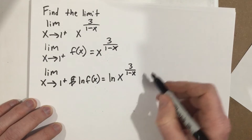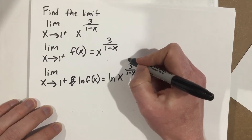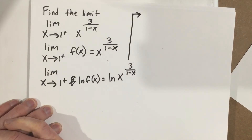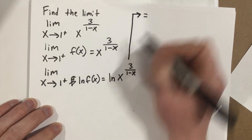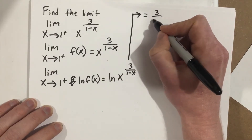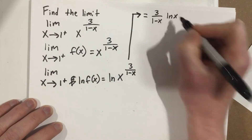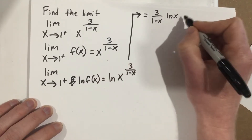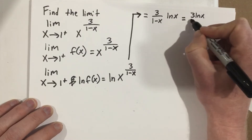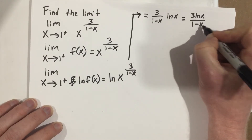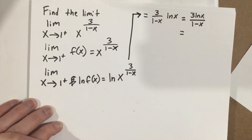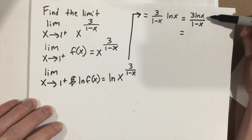When we take the natural log of each side, what's really nice is that the exponent can be moved to the front using logarithm properties. So we bring the exponent to the front and get 3 over 1 minus x times natural log x, which equals 3 natural log x over 1 minus x. Now notice we have a fraction.